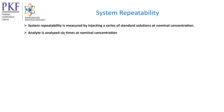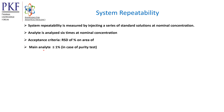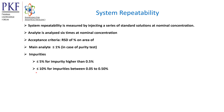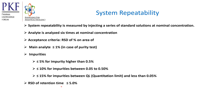The analyte is analyzed six times at nominal concentration. For acceptance criteria: RSD of area percent of mean analyte should be less than or equal to 1% for purity test by area normalization method. For impurity, RSD should be less than or equal to 5% for impurity higher than 0.5%, less than or equal to 10% for impurity between 0.1% and 0.5%, and less than or equal to 15% for impurity between quantitation limit and less than 0.5%. RSD of retention time must be less than or equal to 5%. RSD is not calculated for percentage area lower than the quantitation limit.